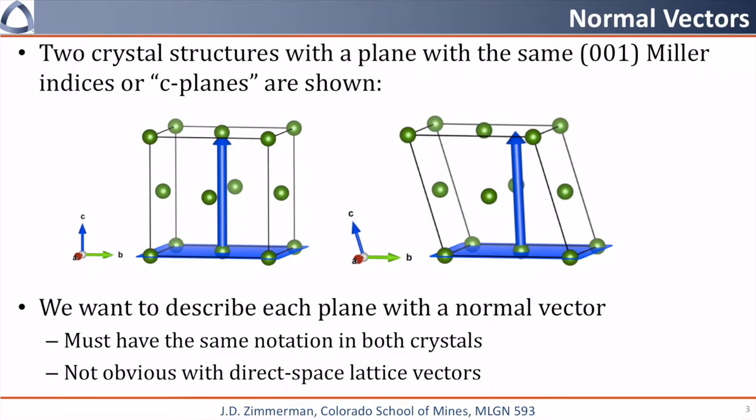It is likely not obvious how to describe this vector in both systems using direct space lattice translation vectors. In the cubic structure at left, you can see that it's just the c direction, but in the triclinic system on the right, the vector has components of all a, b, and c in it.